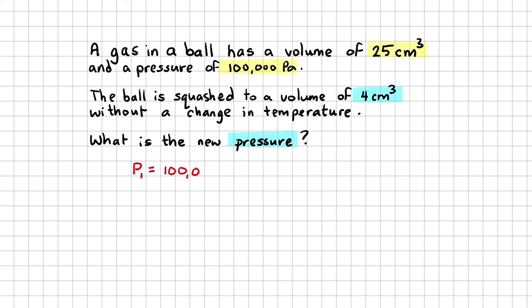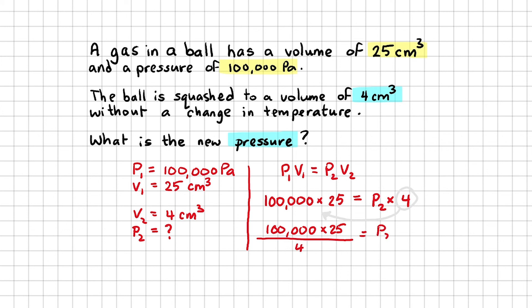Initial pressure is 100,000 pascals, and initial volume is 25 centimeters cubed. Final volume is 4 centimeters cubed, and we want to find the final pressure. P1 V1 is P2 V2. Making our substitutions, we now get this. We now need to make P2 the subject, because that's what we want to find. So to bring this to the other side, we need to divide. So the pressure of the ball after it's been squashed is 625,000 pascals.